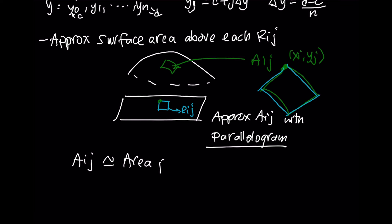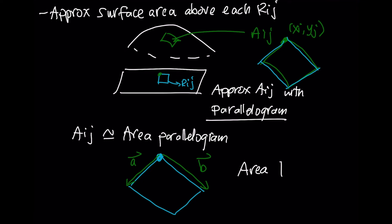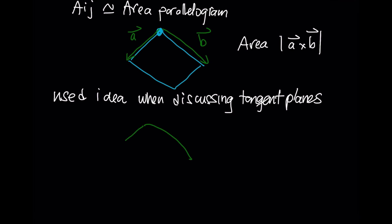Why do we want to use a parallelogram? Because it's a linear surface, and we know something about the area of a parallelogram. Recall that to figure out the area of a parallelogram, we need two vectors: there's going to be some vector a that forms one side of the parallelogram, and a vector b that forms the other side. The area is just the length of the cross product of those two vectors. We used this idea when we talked about tangent planes.